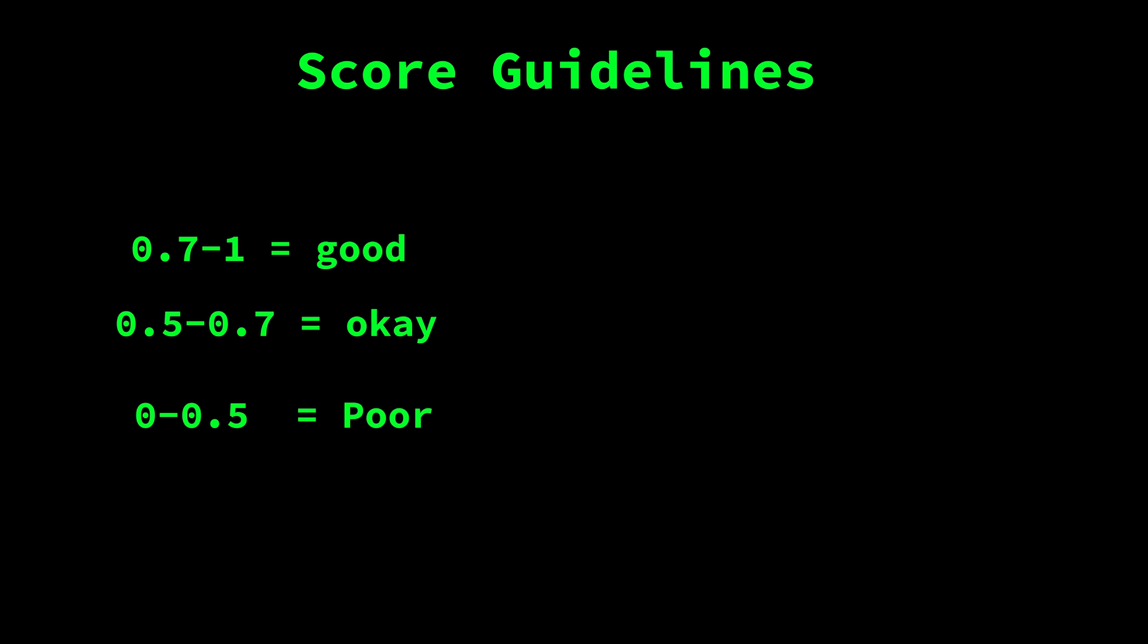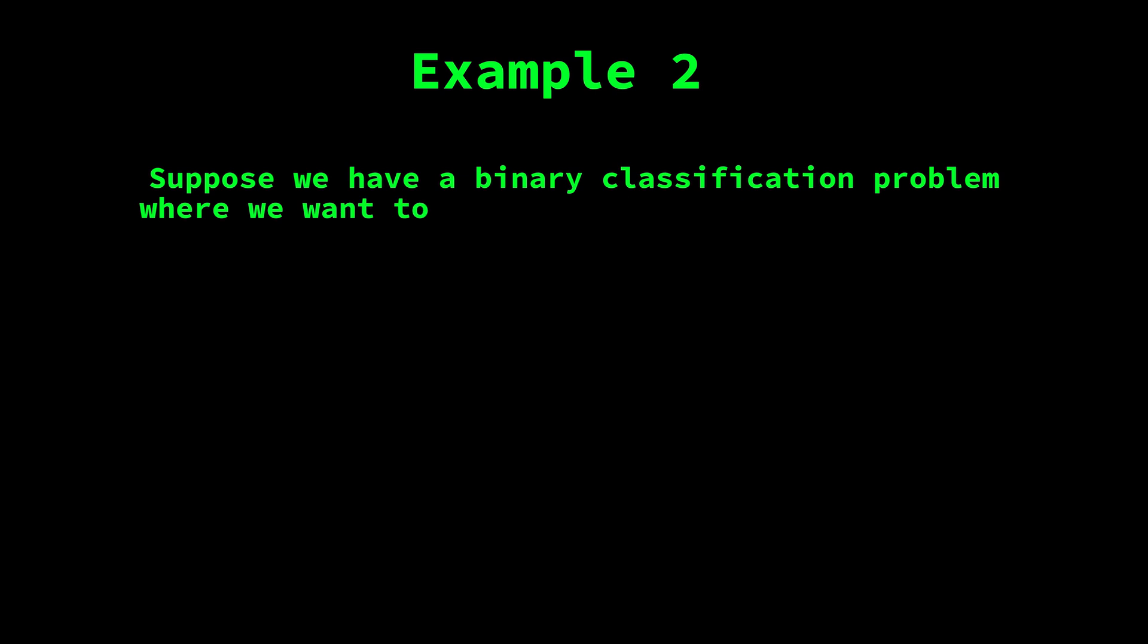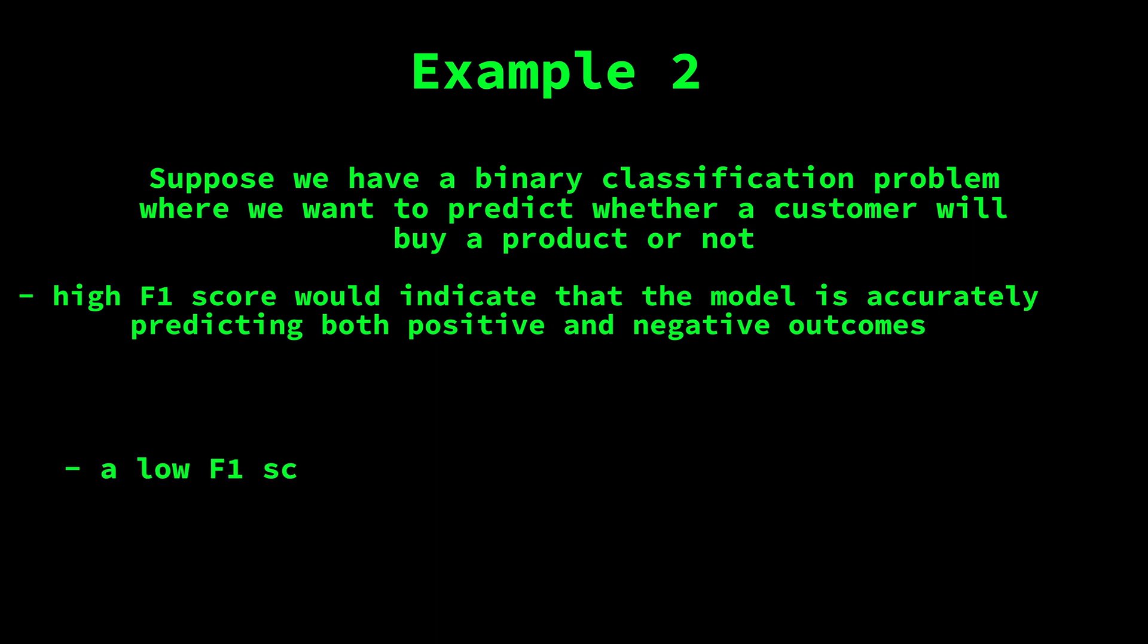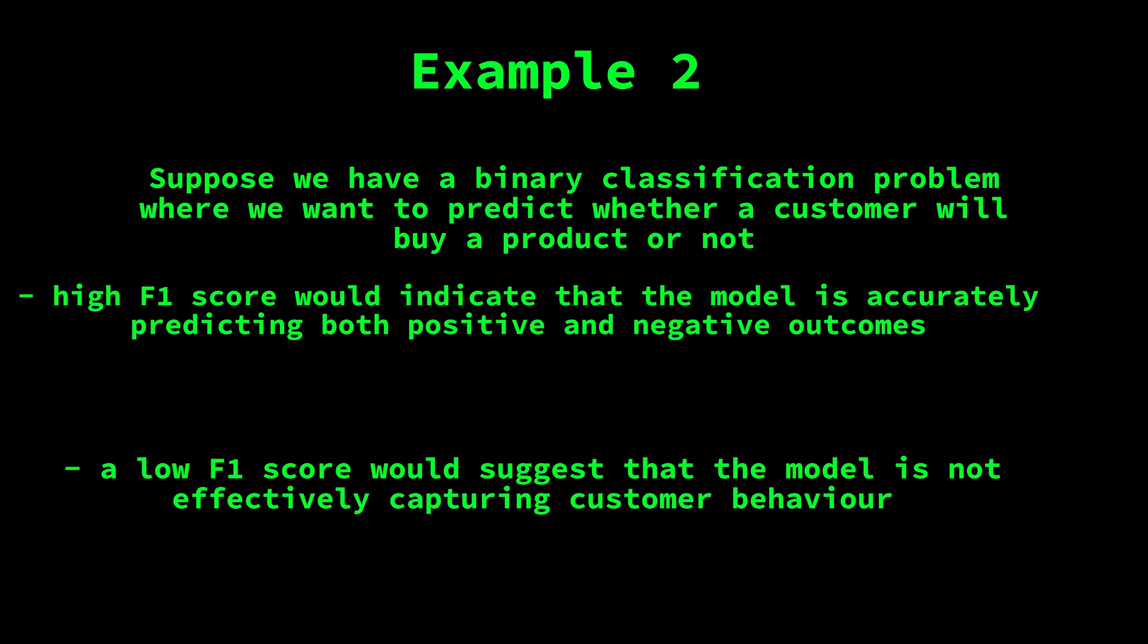Let's look at an example to illustrate this. Suppose we have a binary classification problem where we want to predict whether a customer will buy a product or not. A high F1 score would indicate that the model is accurately predicting both positive and negative outcomes, which could lead to more effective marketing and sales strategies. However, a low F1 score would suggest that the model is not effectively capturing customer behavior, which could lead to missed sales opportunities and wasted resources.